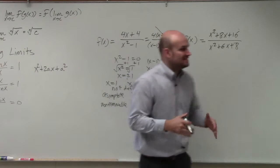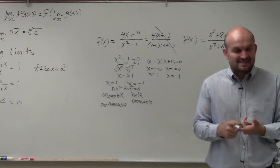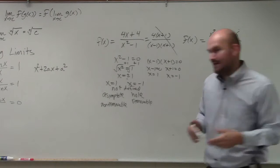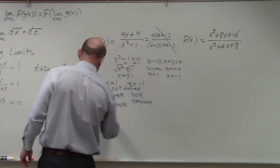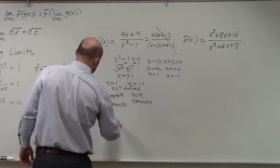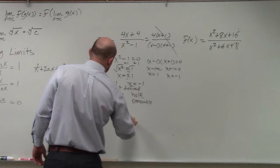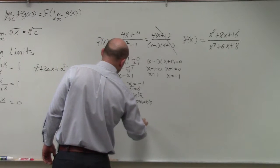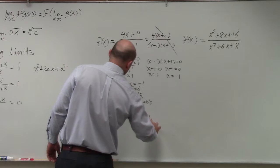However, your domain, it doesn't matter if it's a hole or an asymptote. It's a discontinuity. It's not in your domain. So our domain is from negative infinity to negative 1, union negative 1 to 1, union 1 to infinity.